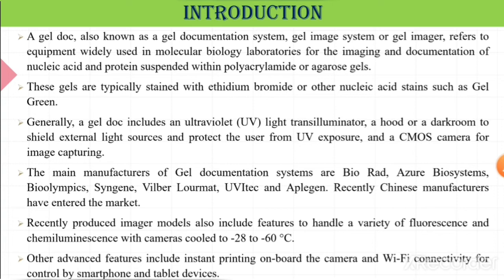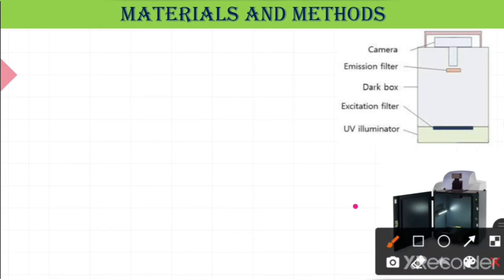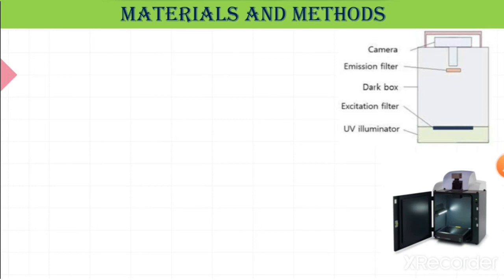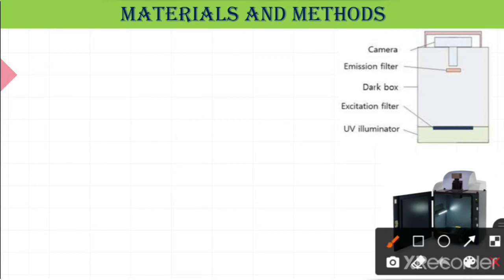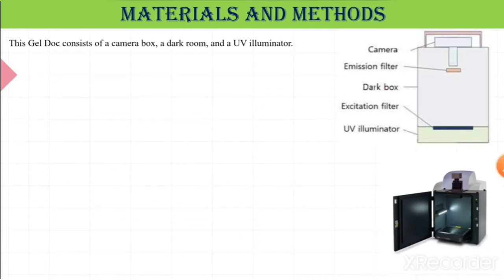Other advanced features include instant printing on board the camera and Wi-Fi connectivity for control by smartphone and tablet devices. Now let's see the materials and methods. The device looks like this — here we can easily see the white UV light and white light. With the camera at the top, there is an emission filter, dark box, excitation filter, and the UV illuminator.